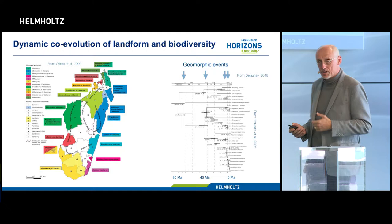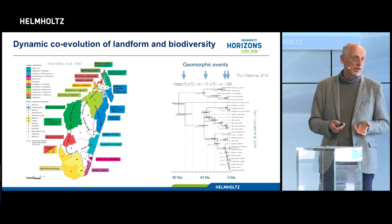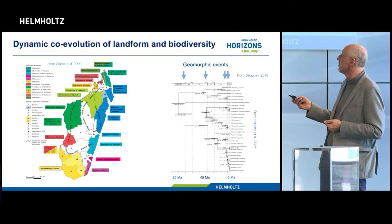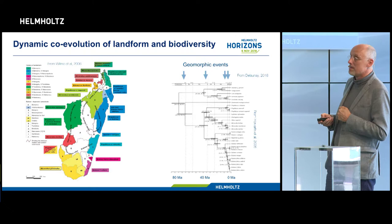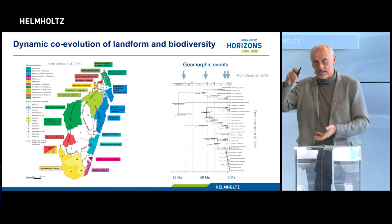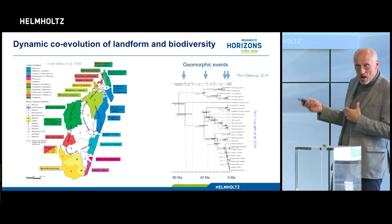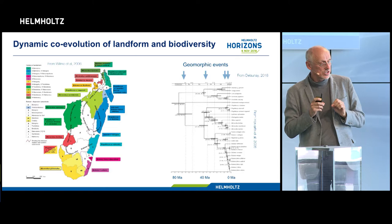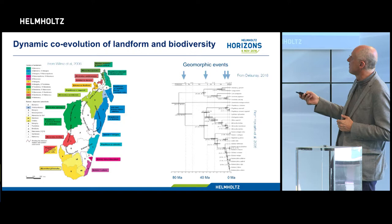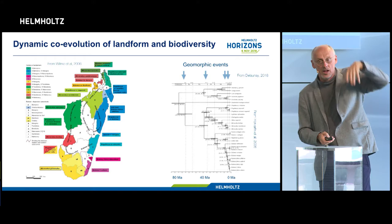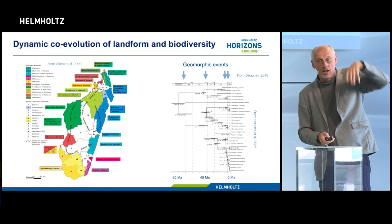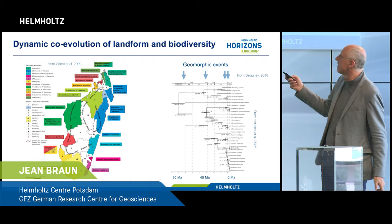I want to finish by talking about the links between landscape evolution and biodiversity. I'll take Madagascar, a well-known hotspot of micro-endemism. Looking at the distribution of lemur species — many different species that occupy roughly the same ecological niche — we see that all this micro-endemism occurs around the edges of the island. The large catchments perched high in the highlands do not show that endemism; instead, a few lemur species live everywhere in those catchments.